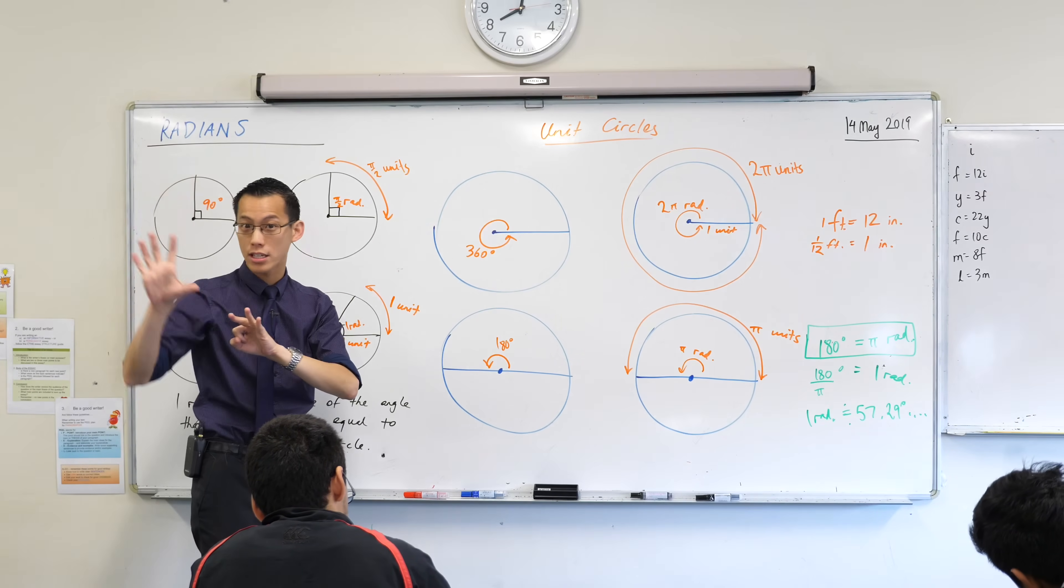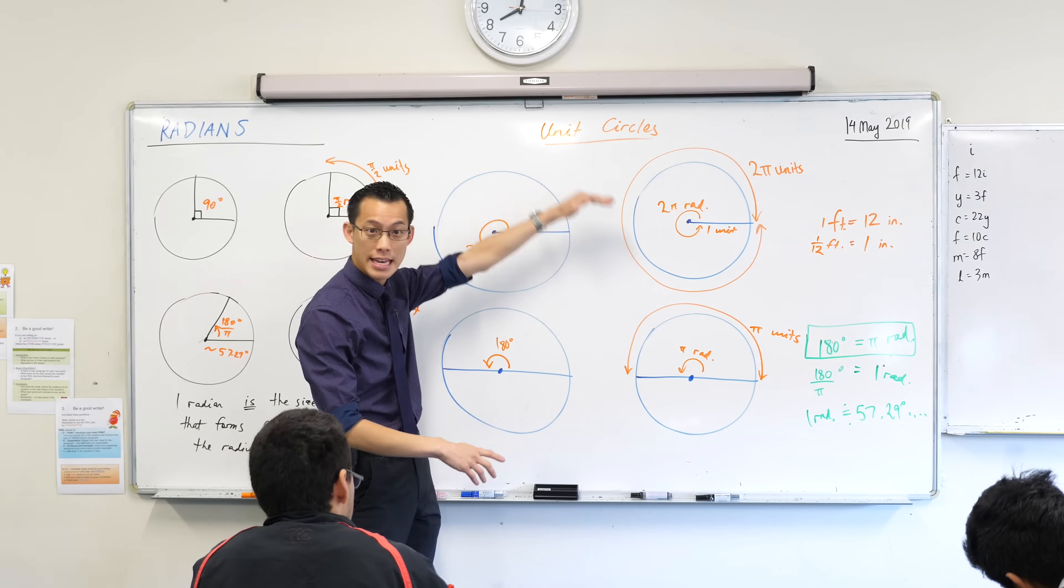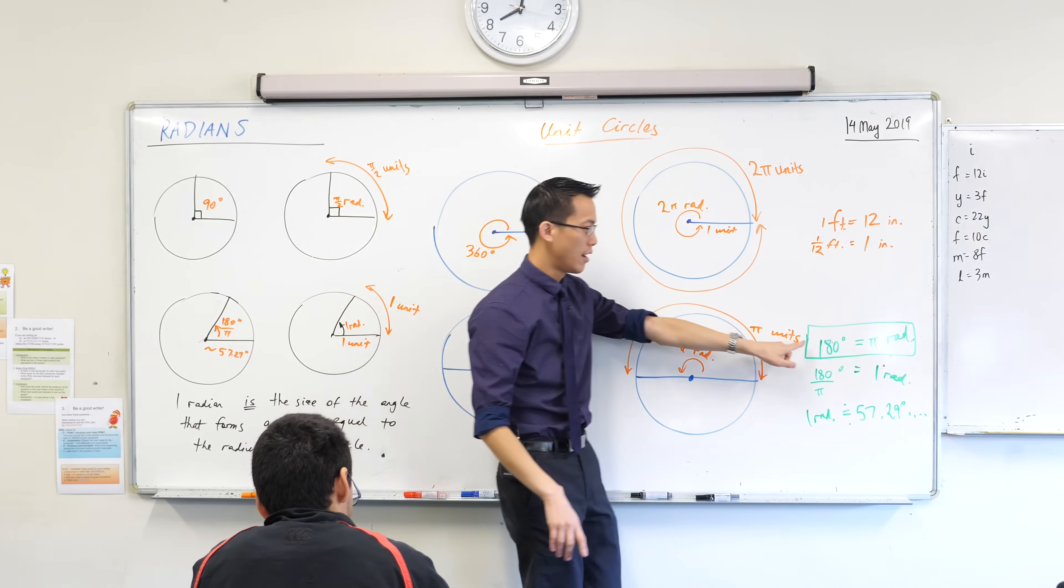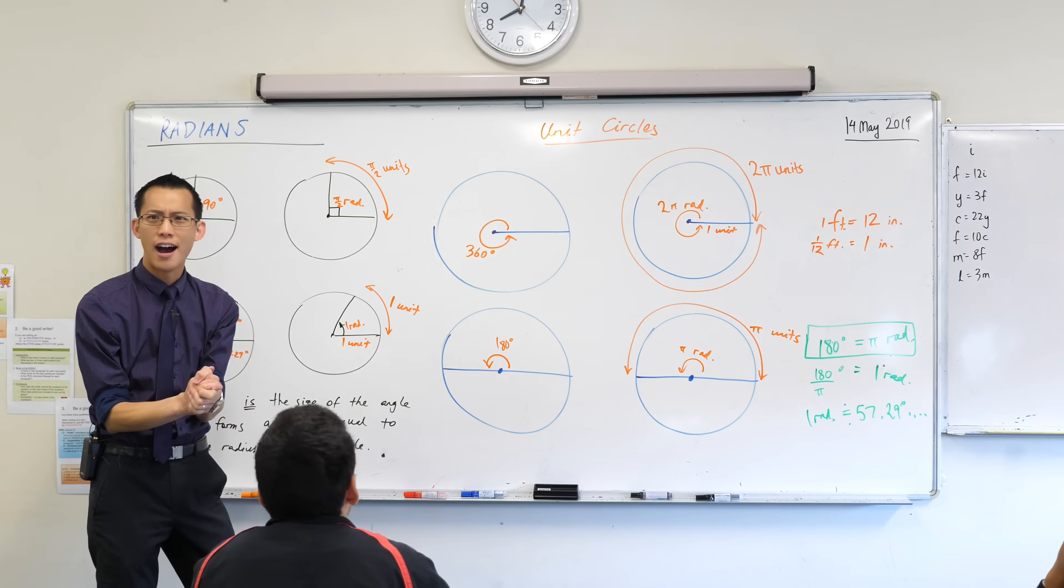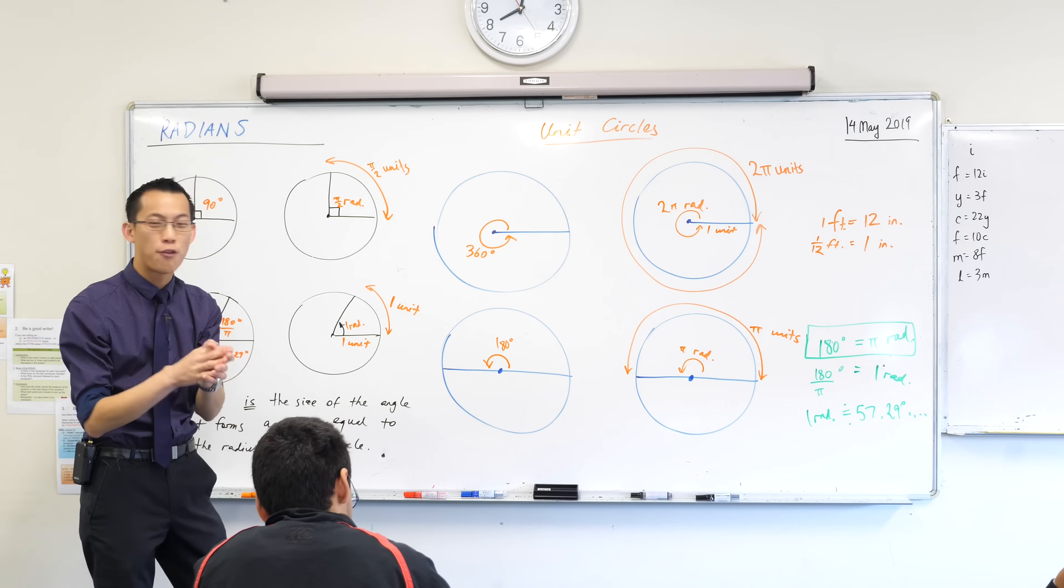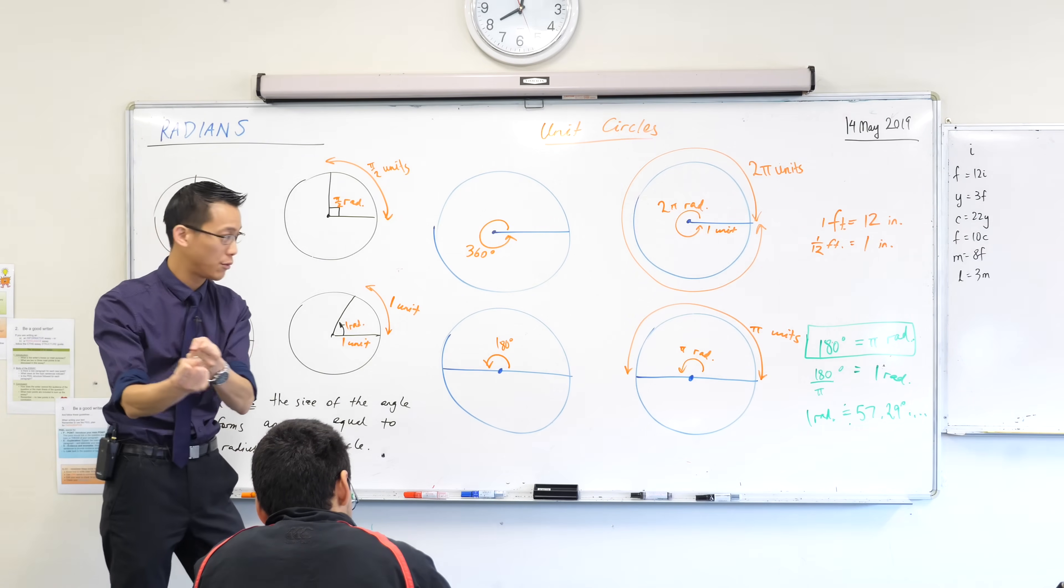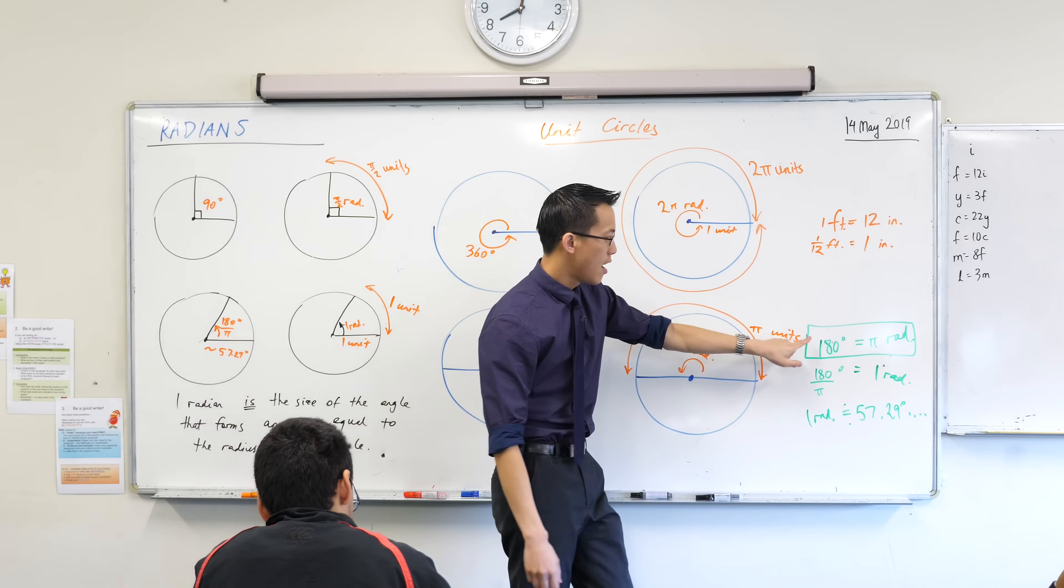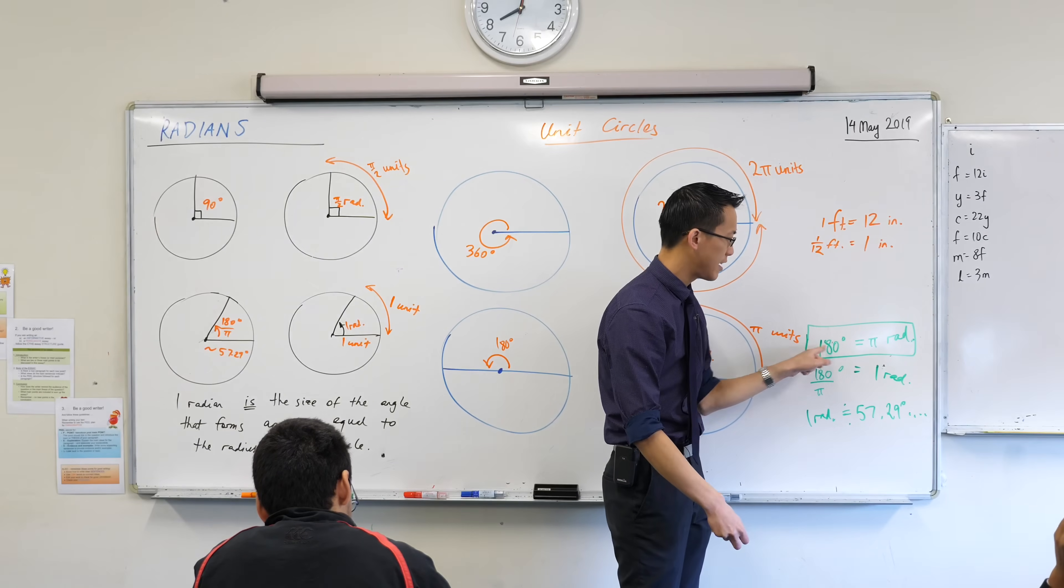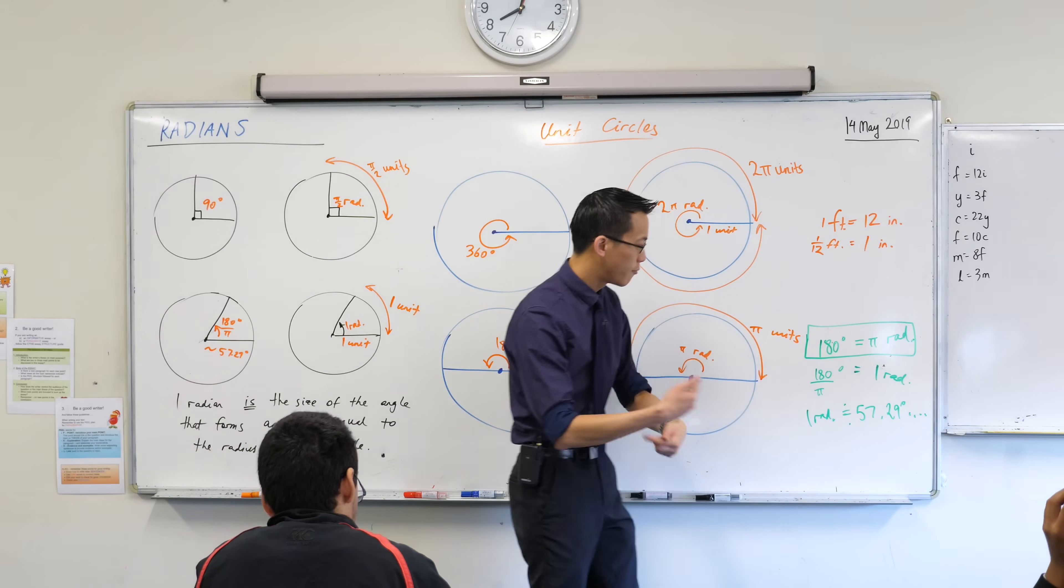And the whole idea was, we couldn't read these three languages, but now we've got the same thing written in all three, and now we can convert between them. It was a really keystone moment, pardon the pun, for being able to work between these languages. This piece here is kind of like the Rosetta Stone of radians. If you remember that 180 degrees is π radians, you can convert back and forth.